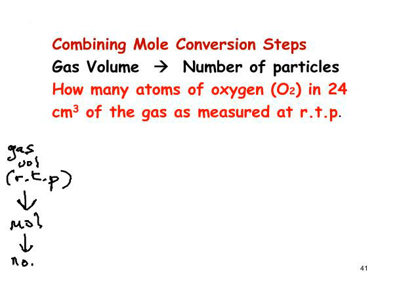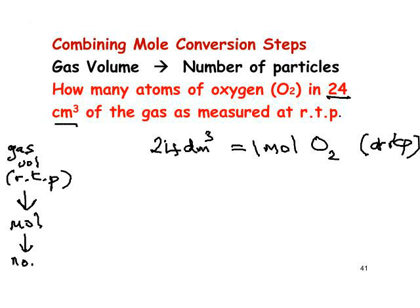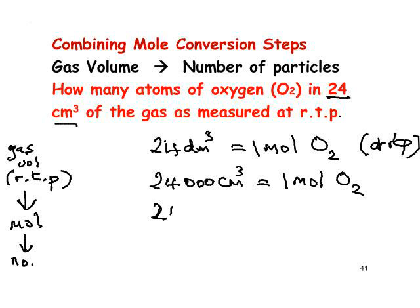We have 24 cubic centimetres of gas. We should be given that 24 dm³ equals 1 mole of any gas — in this case, 1 mol of oxygen — at RTP. Now, we have 24 cubic centimetres, not 24 cubic decimetres. 24 cubic centimetres is 1/1000th of 24 cubic decimetres, so 24,000 cubic centimetres is 1 mole. Therefore 24 cubic centimetres divided by 1,000 gives 0.001 mol.